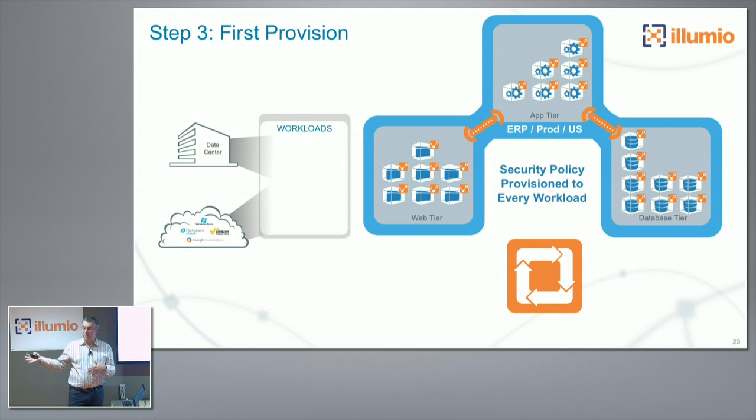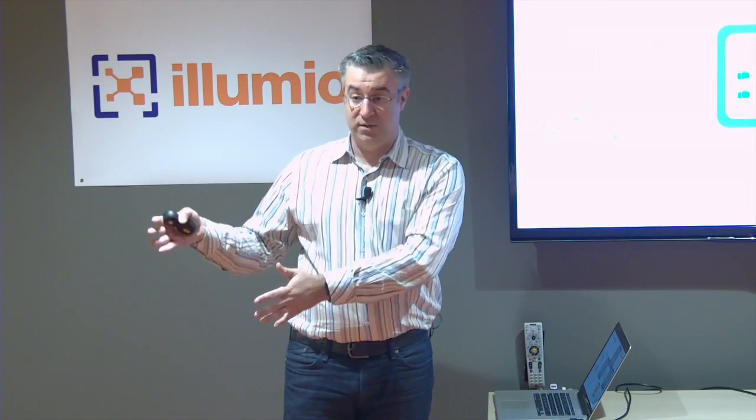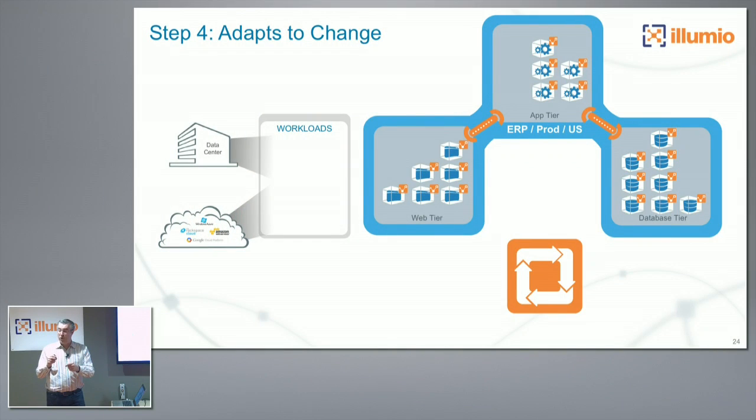That's why we can have unmanaged workloads in this model as well. If you had a NetApp filer where you couldn't install a VEN, you can still control access to that unmanaged workload because you still have the egress point of control. As things change, the policy compute engine understands those changes and only reconfigures the necessary and impacted things — using graph algorithms to understand a node and its connected edges, pushing out minimal policy only to impacted workloads.